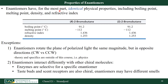For the most part, enantiomers have identical physical properties. These include boiling point, melting point, density, and refractive index. Let's look at 2-bromobutane and compare the R enantiomer to the S enantiomer. The R enantiomer has a boiling point of 91.2 degrees Celsius, and the S enantiomer also has a boiling point of 91.2 degrees.